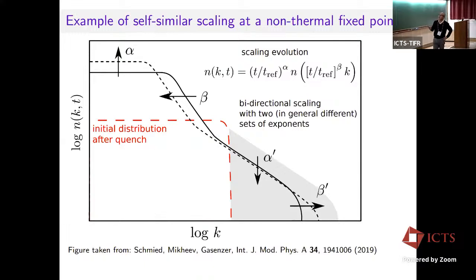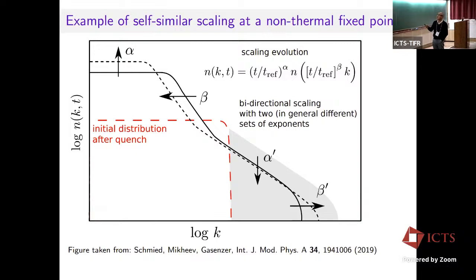This is a typical picture from Thomas Gasenzer's papers, showing the momentum distribution. This is an initial configuration distribution. After a quench, the distribution develops to something like that. Depending on some conditions, the reference time may differ. But the key point is that the development of the distribution should obey a dynamical scaling law.